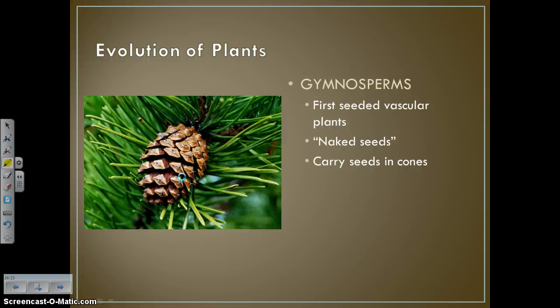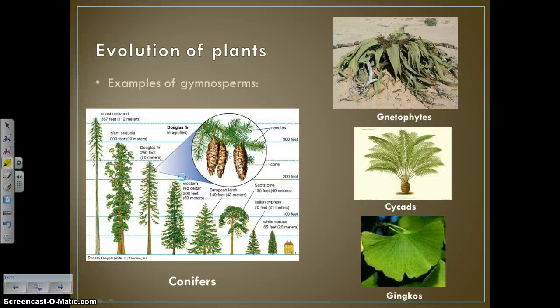Our first seeded vascular plants were gymnosperms — the word to think of when you hear gymnosperms is 'cones.' Gymnosperm literally means naked seeds, because the seeds are just carried on cones and not really protected in any way. Examples of gymnosperms include conifers like pines, firs, and spruces, as well as plants called gnidophytes, cycads, and ginkgos. These are all seeded vascular plants that carry their seeds in cones.